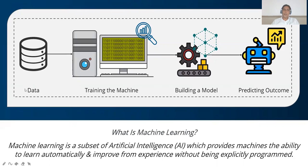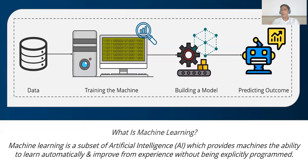To collect data, there are a number of algorithms and resources. You can take the dataset from websites or collect it manually. We collect the data, train the machine, then build the model with the help of an algorithm. Then we match the outcome of the model with our expected problem solution. If it matches, we proceed to testing; if not, we continue training.